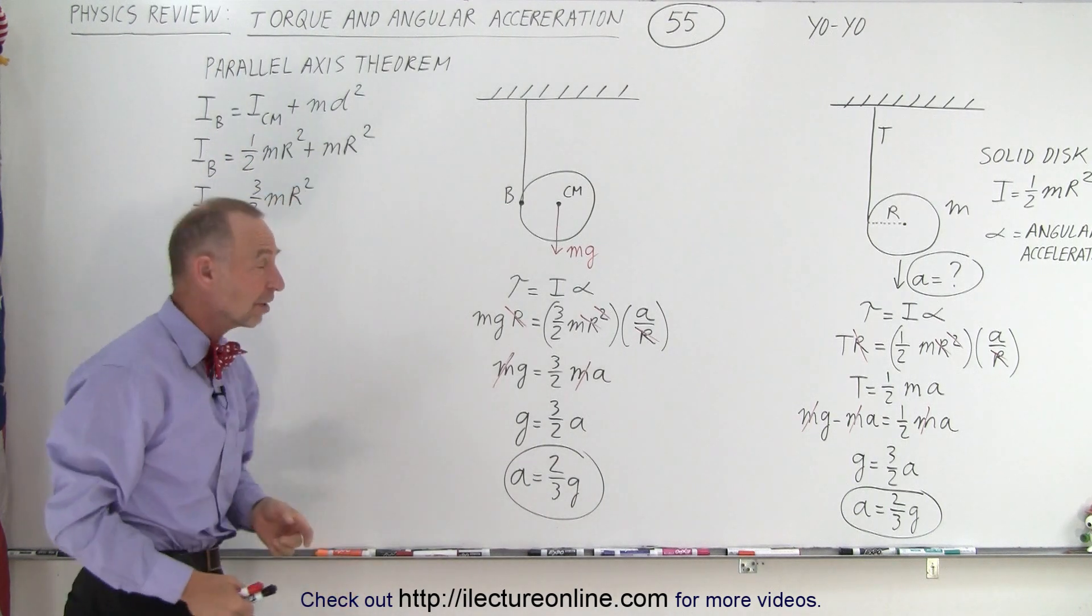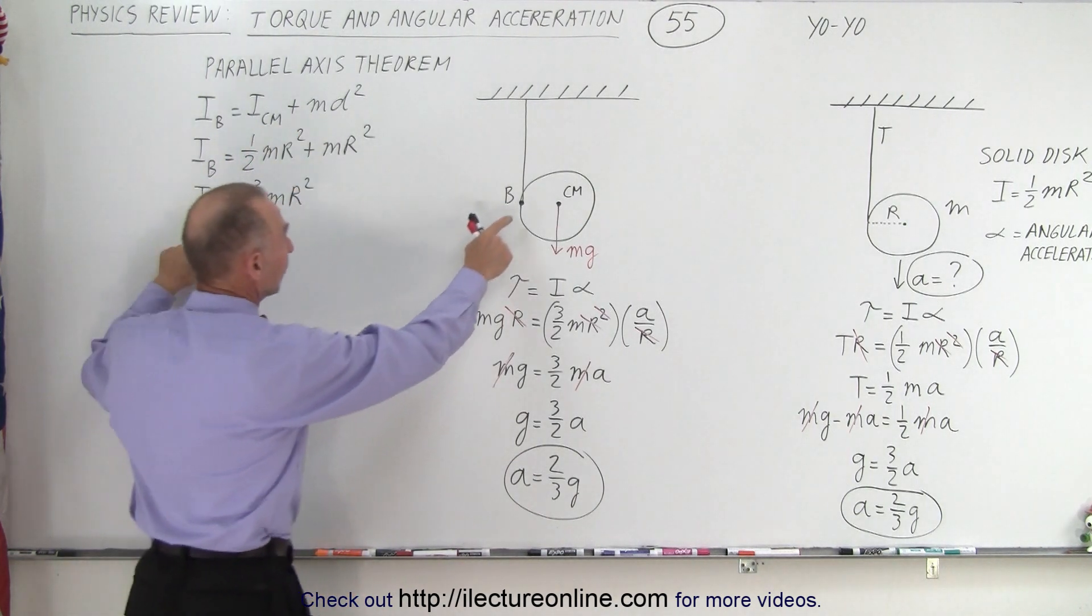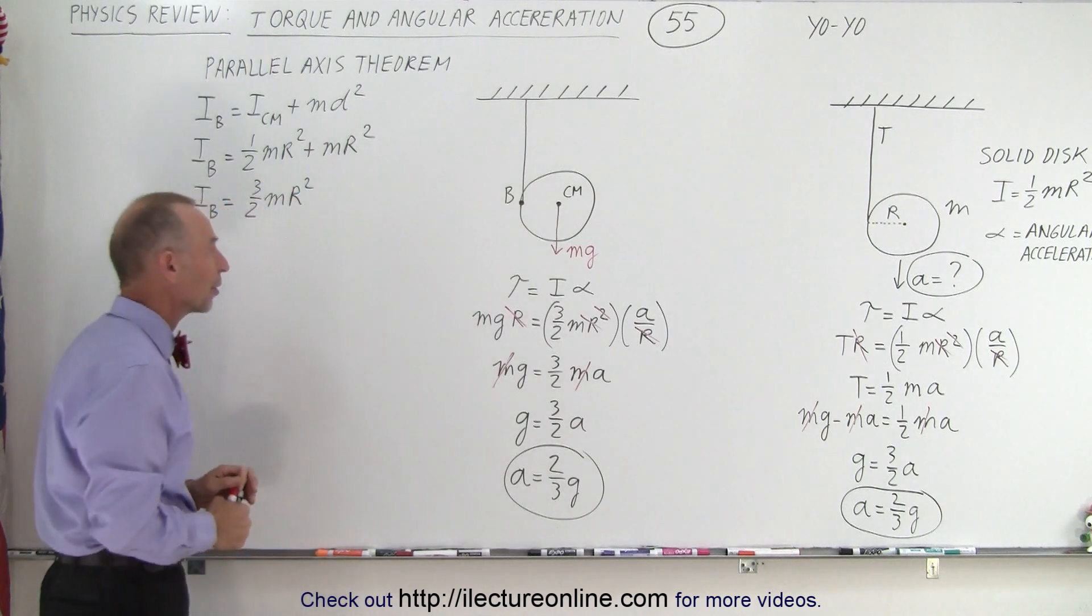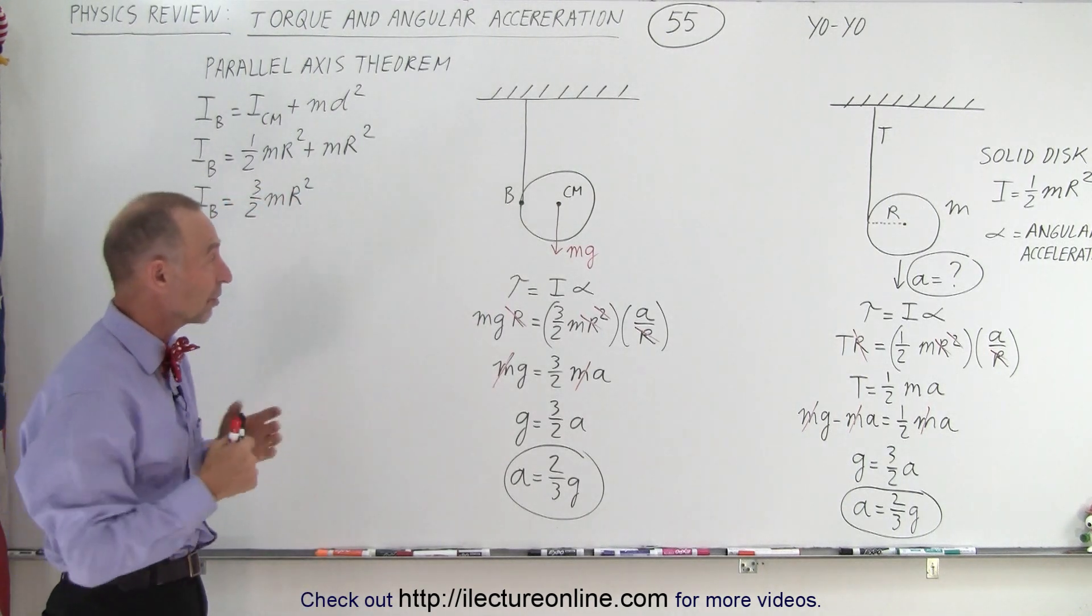Of course, d is the radius of the disk, and we get a new moment of inertia relative to point b of three halves m r squared, and we do the same process.